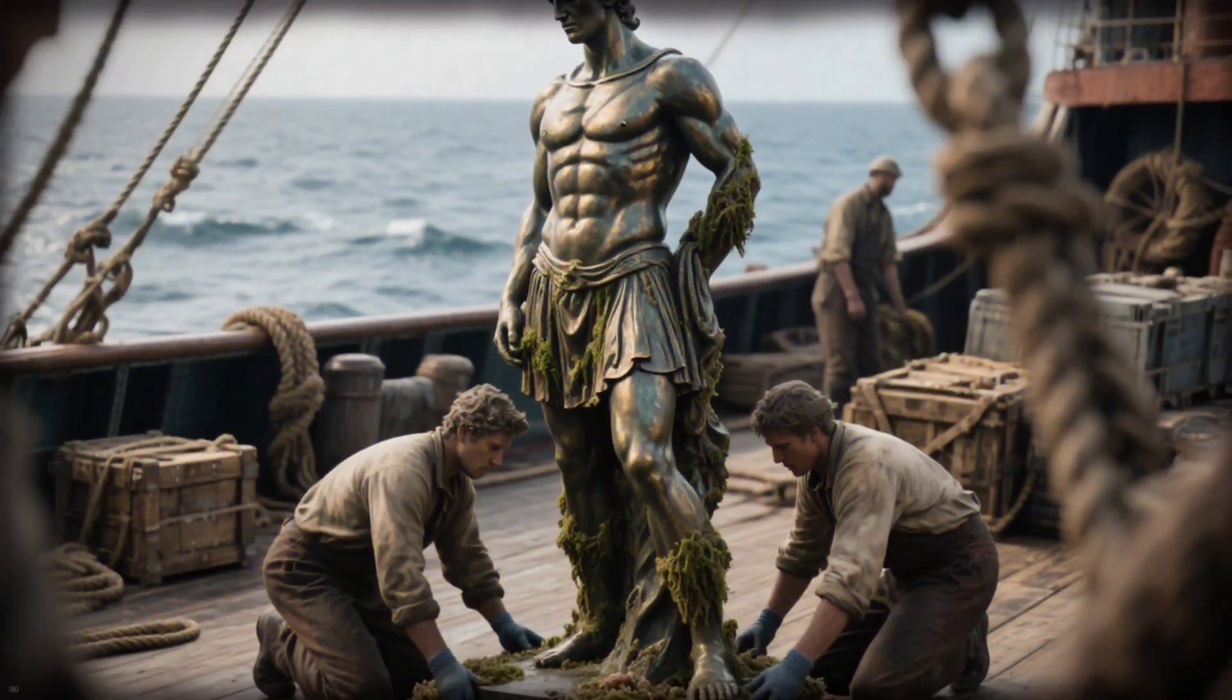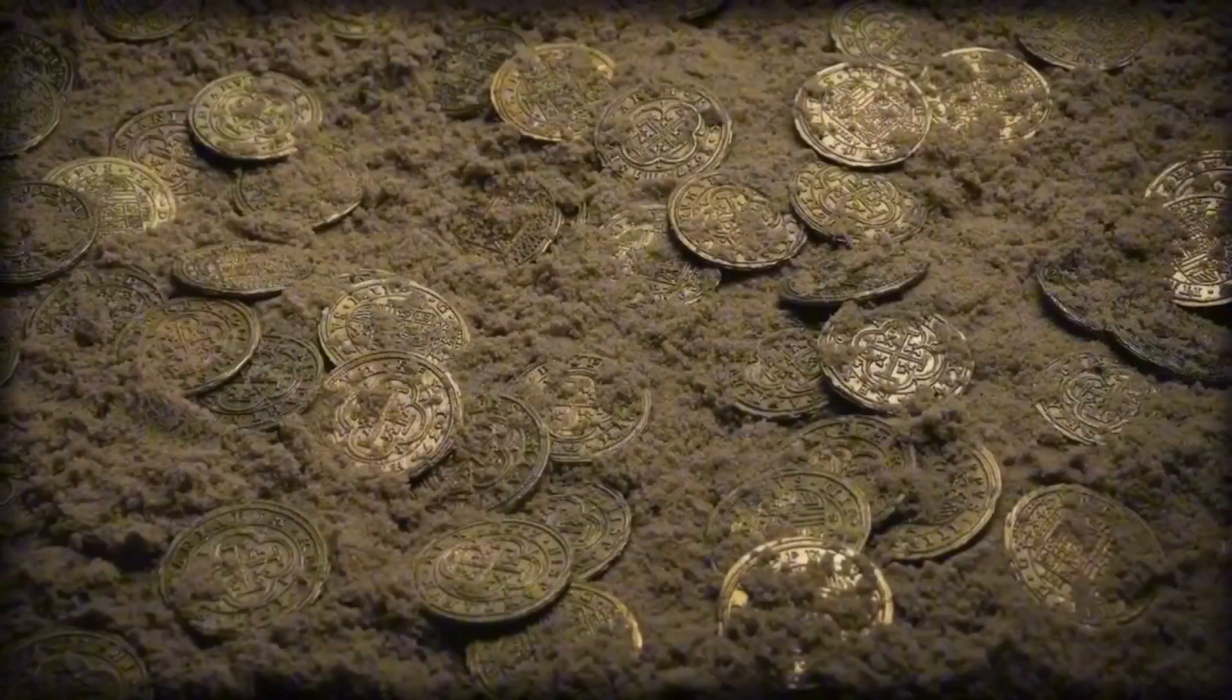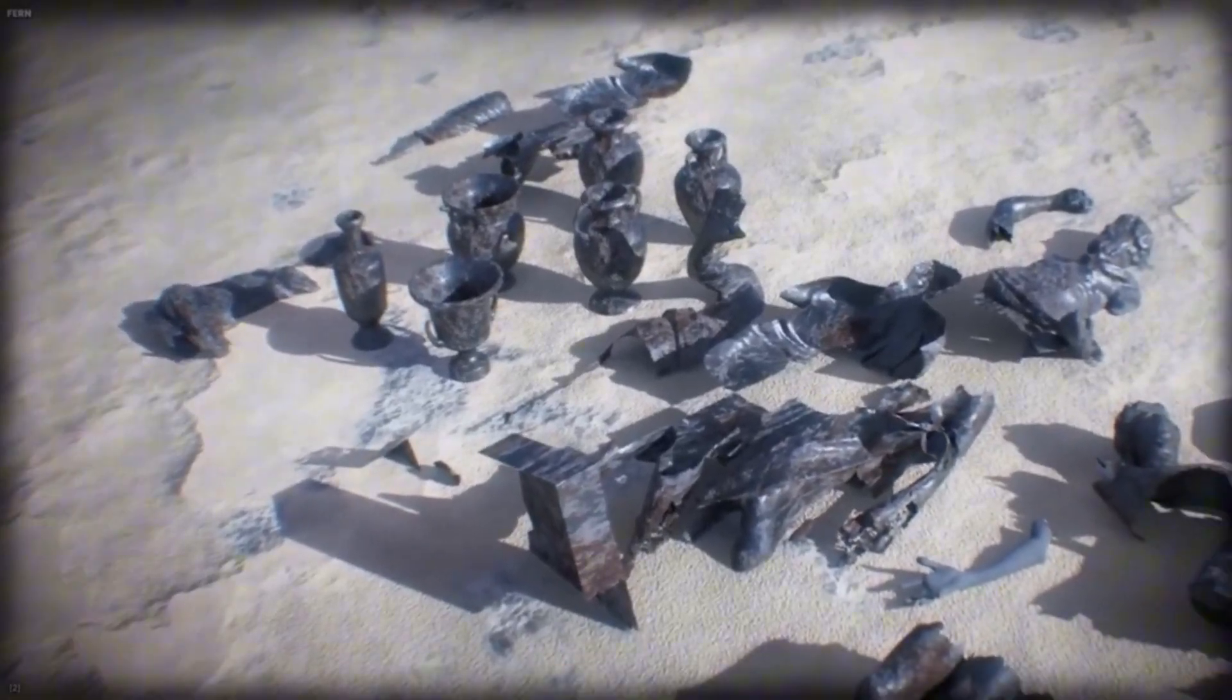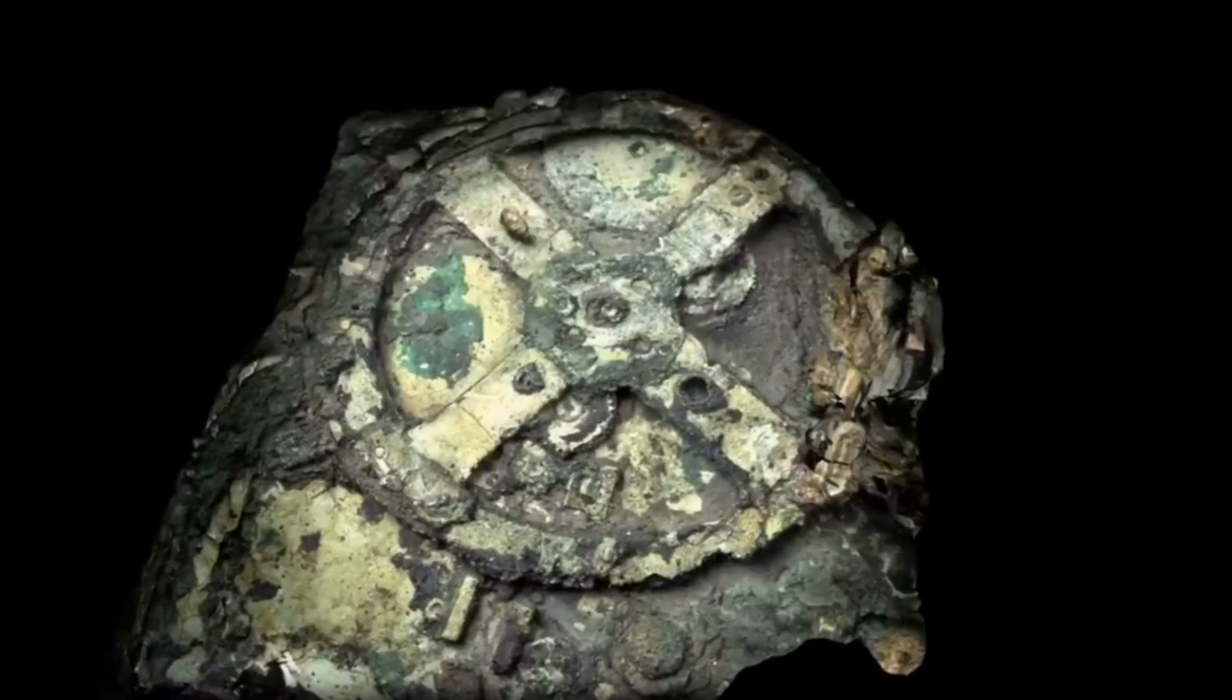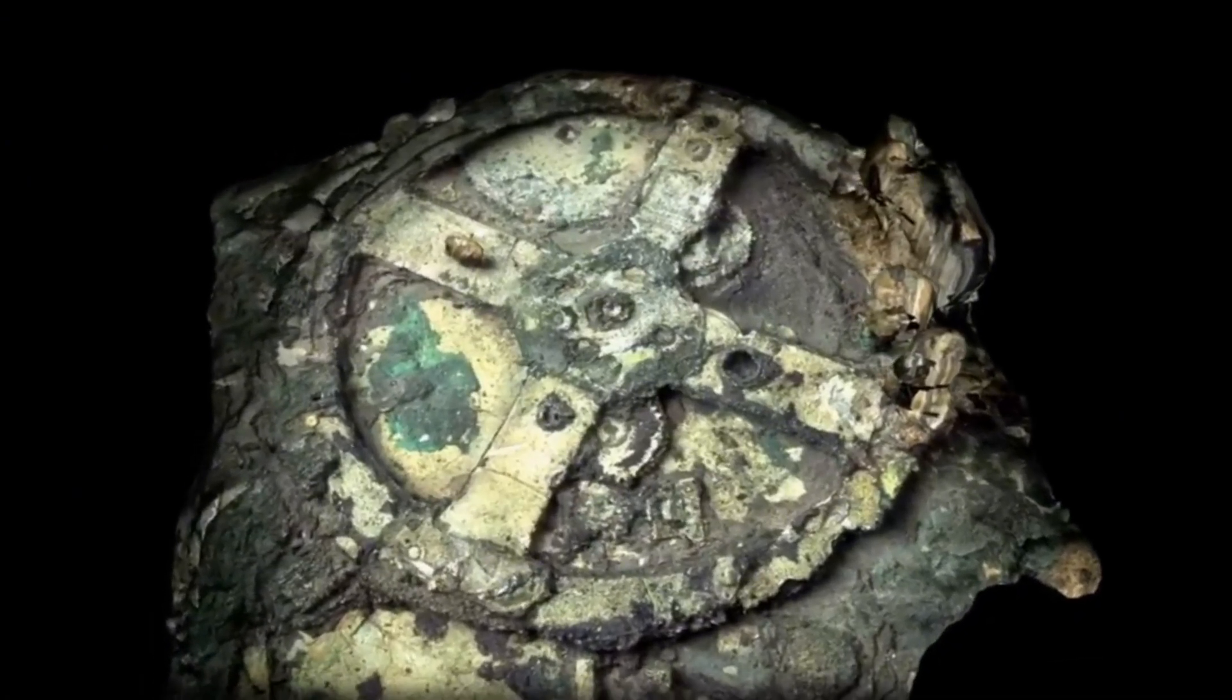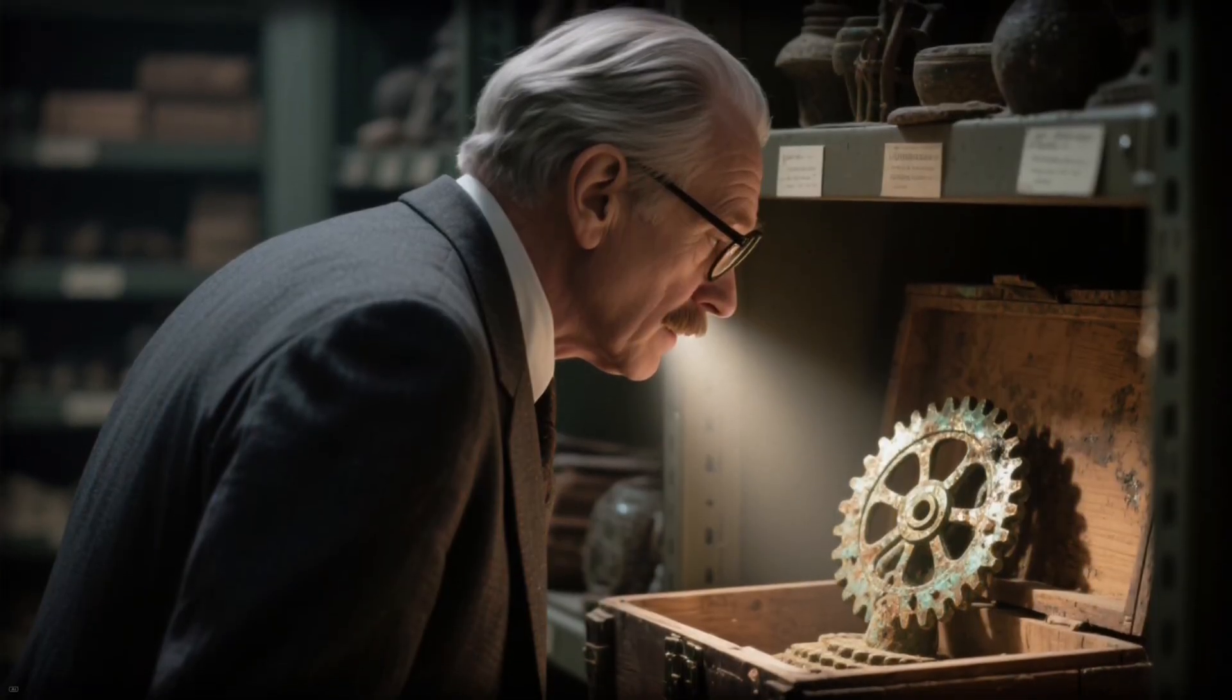They brought up statues of gods and heroes, marble faces staring into eternity, coins, glassware and fragments of something no one could identify. Among the treasures was a small, corroded lump of metal and wood. It didn't look like much, just debris forgotten. It would sit untouched in a museum crate for months, until a sharp-eyed scholar noticed a glint of something impossible.